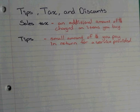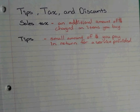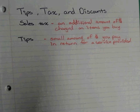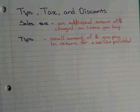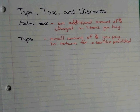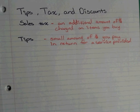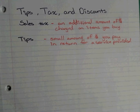Regarding donating clothes to places that sell items again — those are called thrift stores or consignment shops. They buy the item at a discounted price from you and sell it for a small markup. Those are not organizations you can claim on your taxes. Organizations you can claim include Salvation Army, where you donate items and they give them away for free.